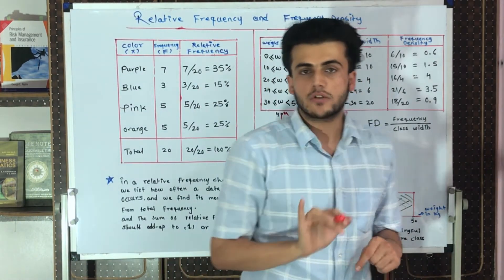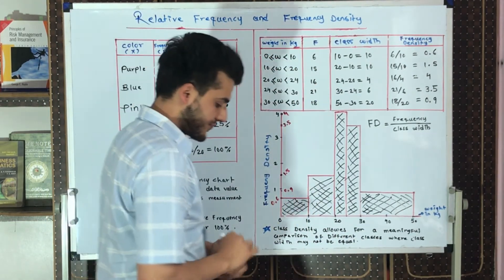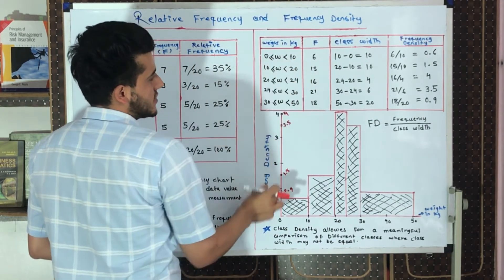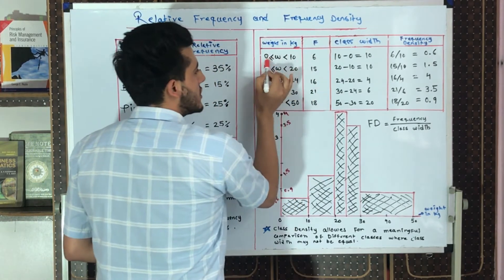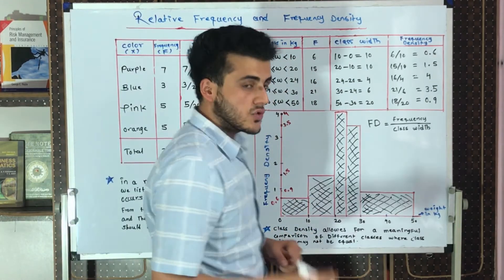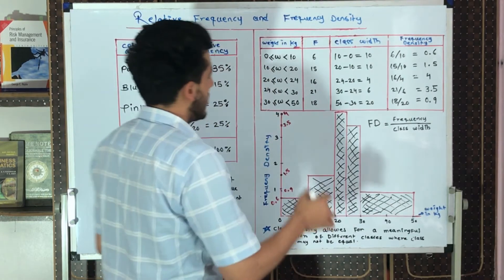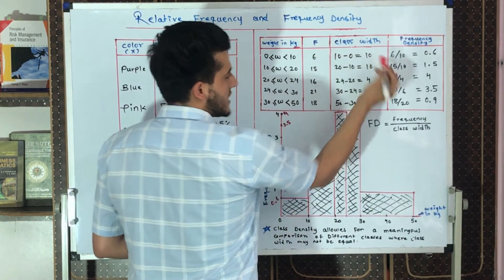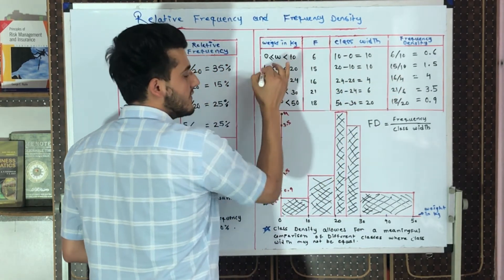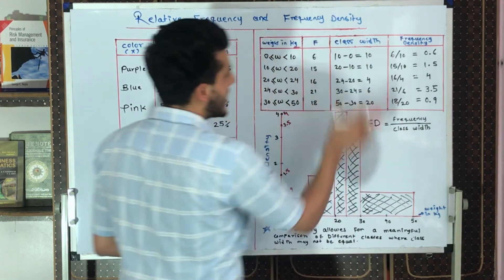Here we have a dataset showing weight in kilograms of children, ranging from 0 kg to 50 kg. To find the class width of every class interval, we subtract the lower limit from the upper limit. So 10 minus 0 equals 10, and 20 minus 10 equals 10 — this is as straightforward as finding the class width.